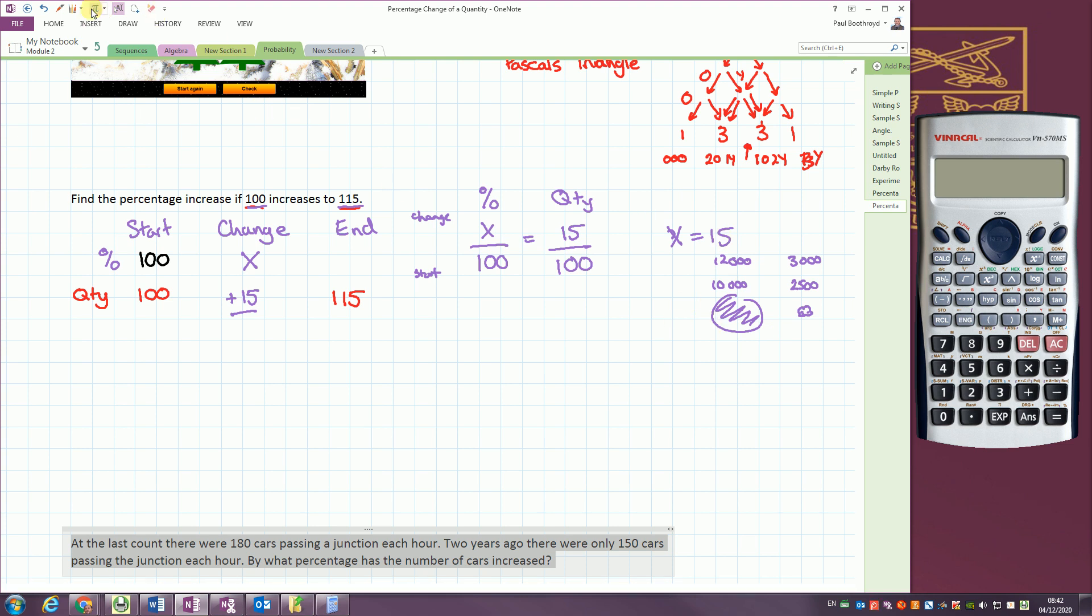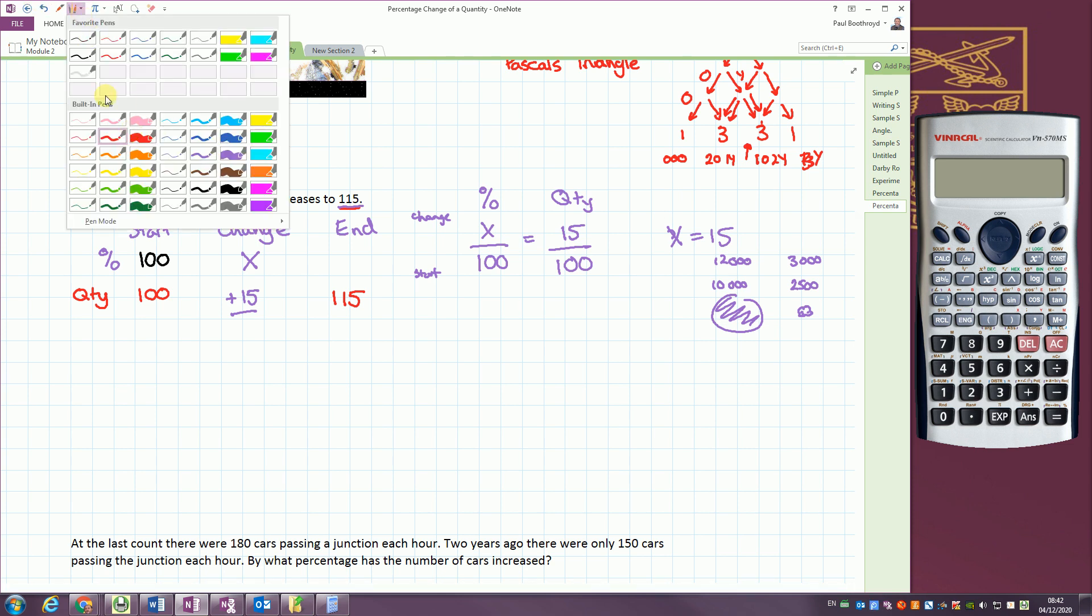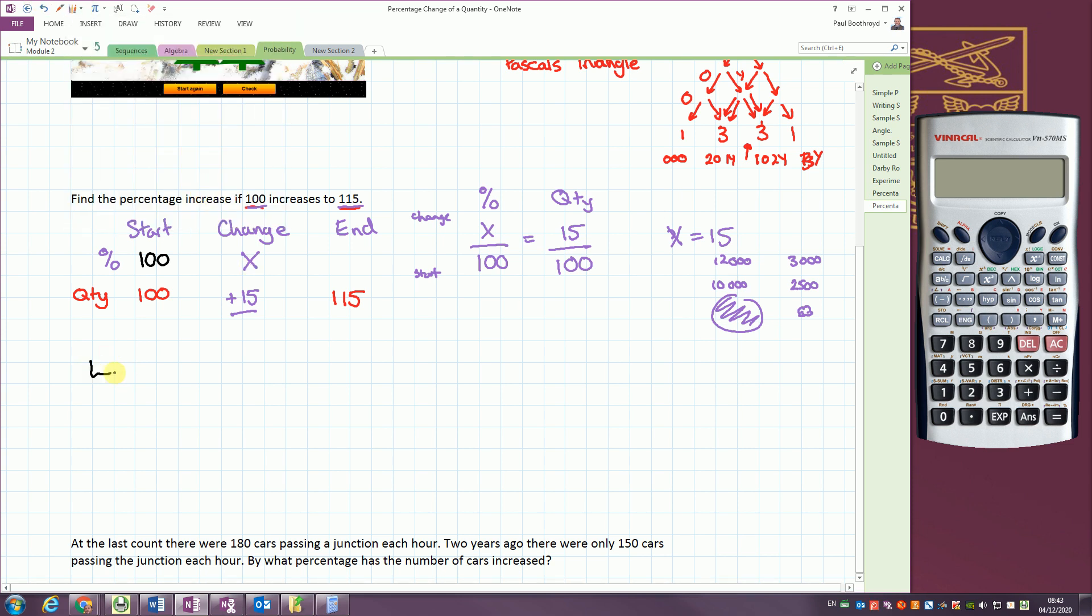Let's do the large town. The large town grows from 10,000 people to 12,000 people. We're going to calculate that as a percentage. What's the percentage for this one? We've got start, change, end, percentage, and number of people.